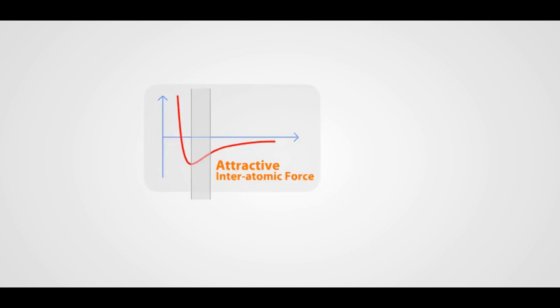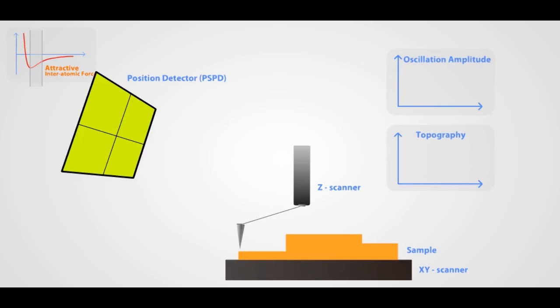In non-contact AFM, the cantilever oscillates just above the surface while it scans, but the tip does not touch the surface.